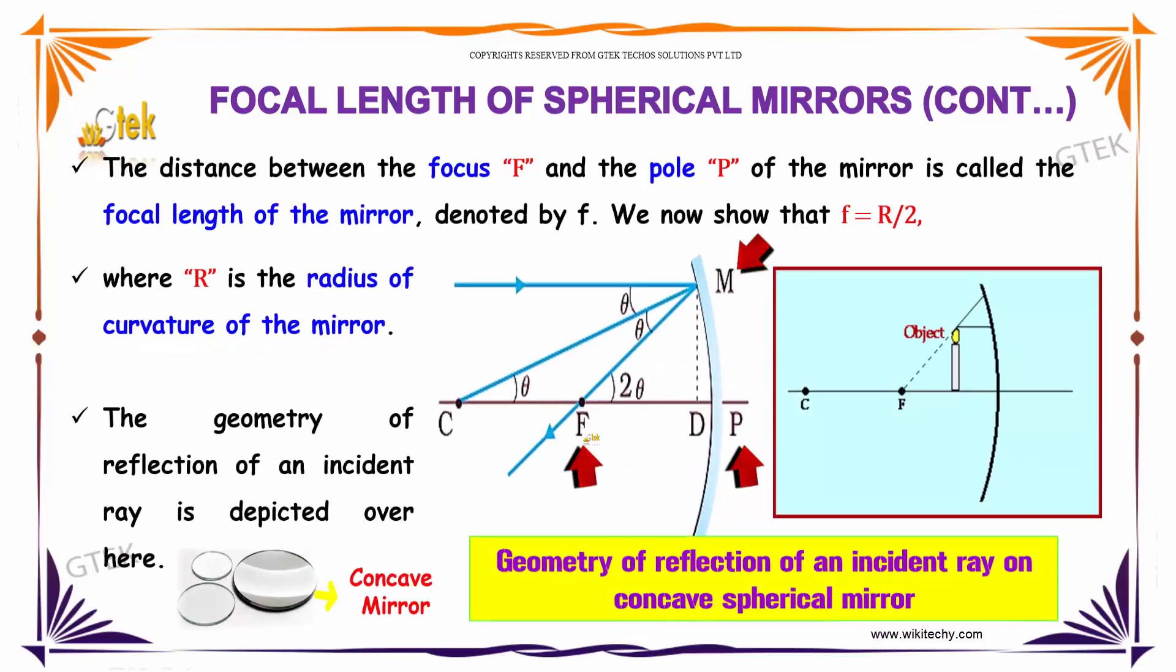The distance between the focus and the pole of the mirror is called the focal length of the mirror, denoted by f. We know that f is equal to R divided by 2, where R is the radius of curvature of the mirror.